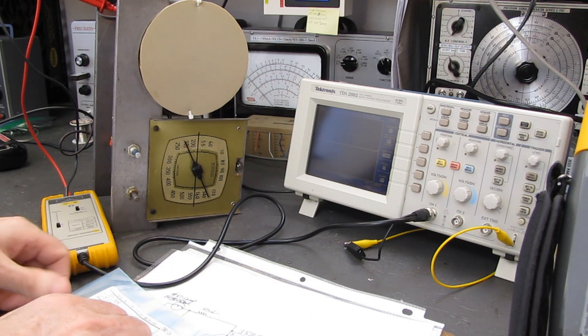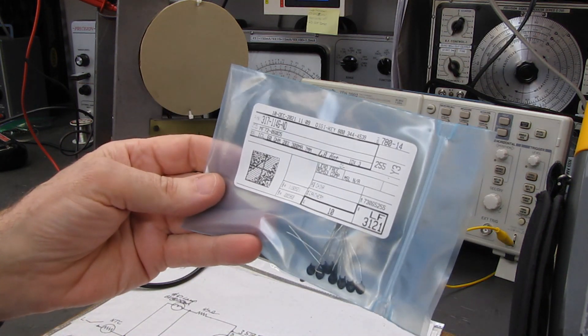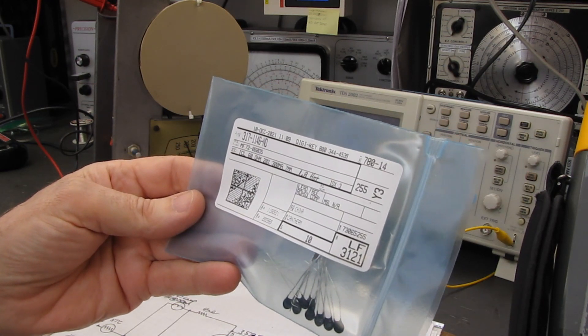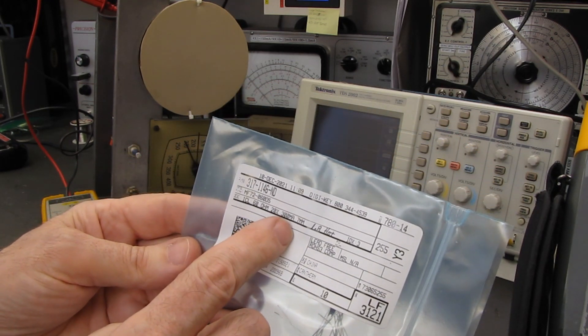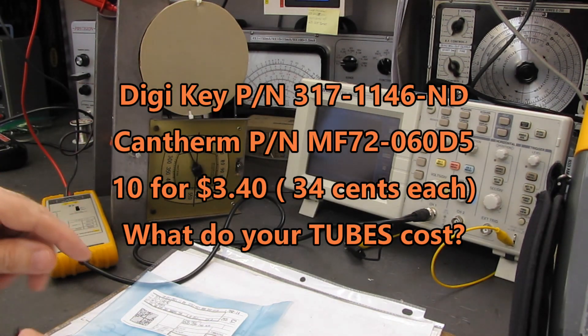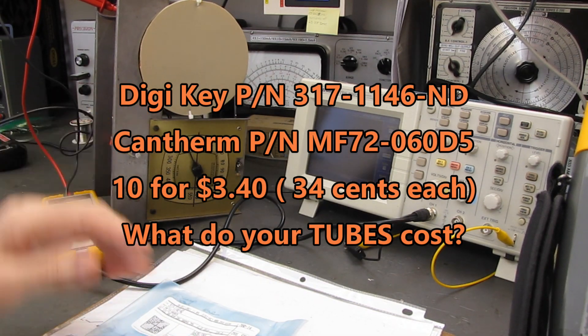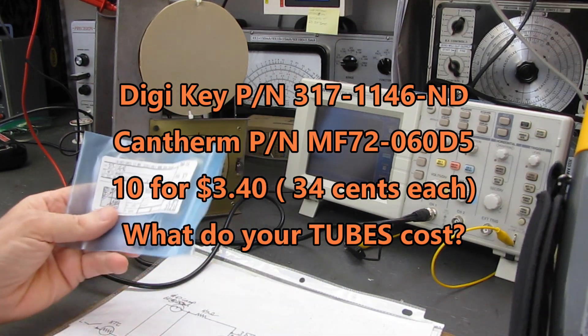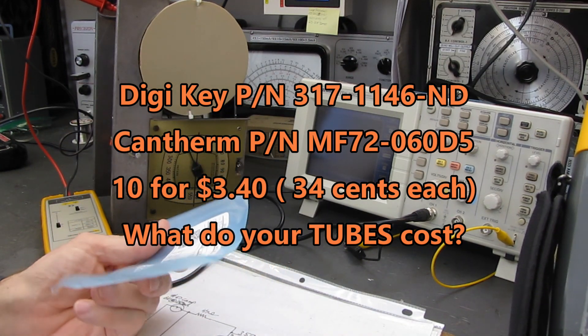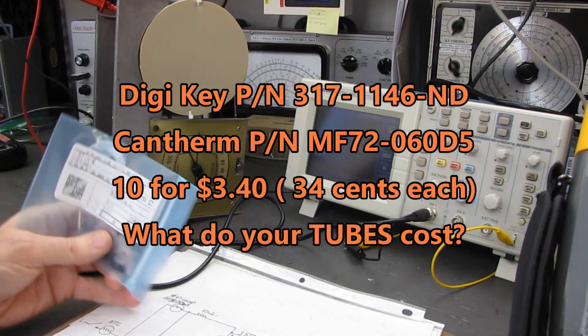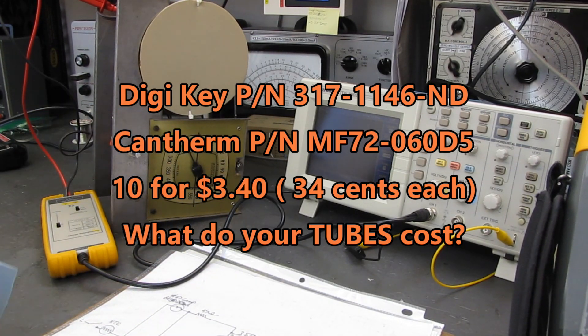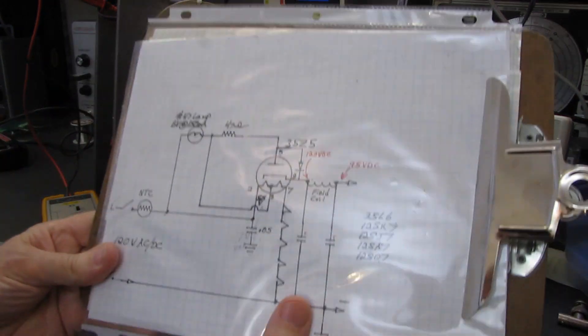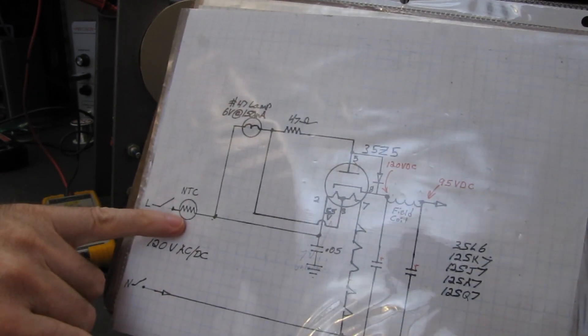Now these are rated for 300 milliampere. This radio draws about 250, 260 milliampere when it's running. 150 milliampere of that is heater string and the rest of it is about 100 milliampere of draw for the B+.